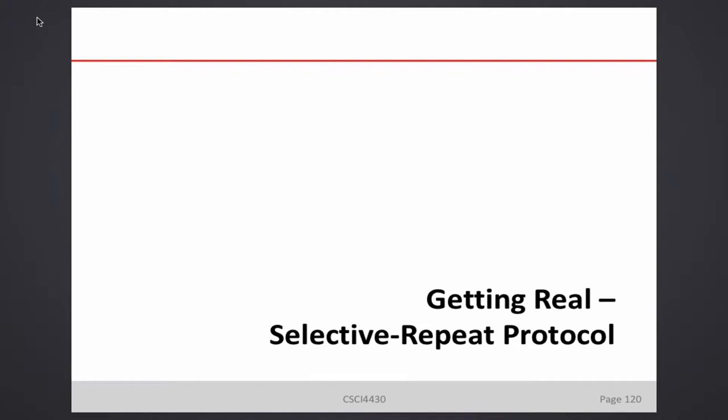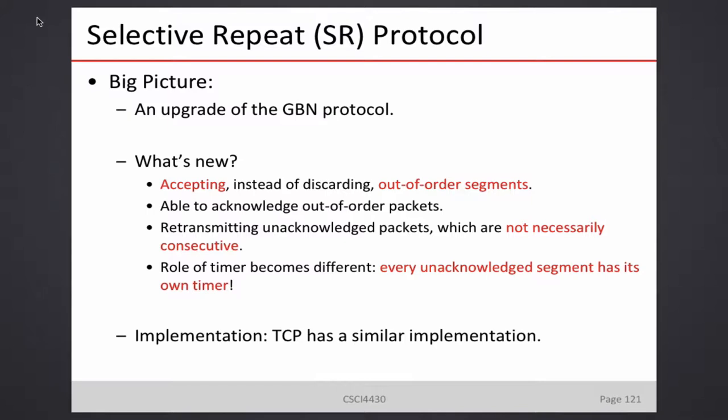In Selective Repeat, the retransmission of lost packets from the sender side is selective. The upgrade is accepting all packets on the receiver side. The price to pay: every unacknowledged segment has its own timer. So originally you have one alarm clock; now if you send one thousand packets, you set up one thousand alarm clocks. Another price: retransmitting an unacknowledged packet which is not necessarily sequential, so the ACK itself will change a little bit.